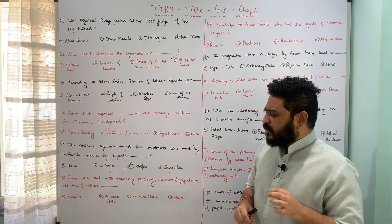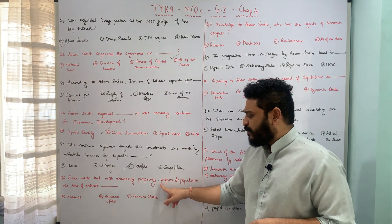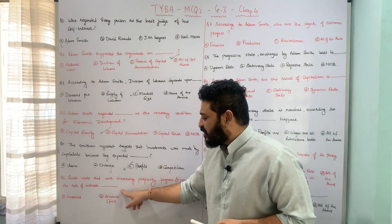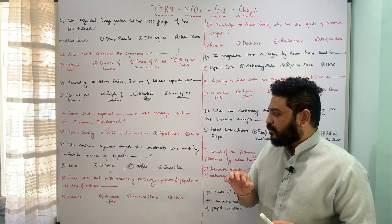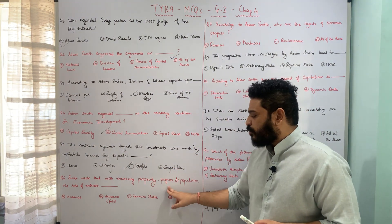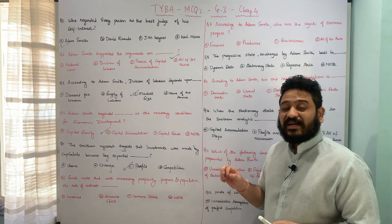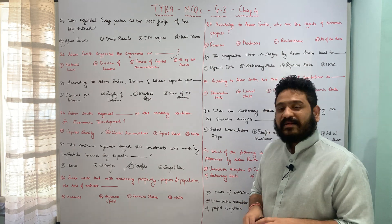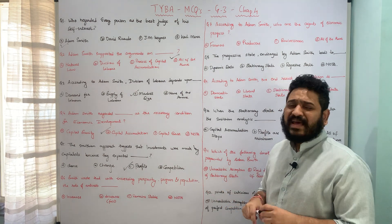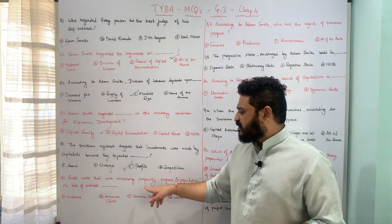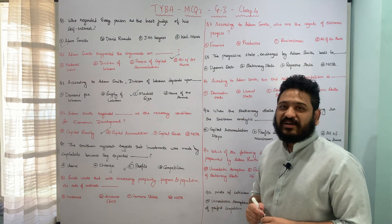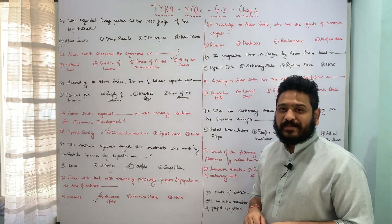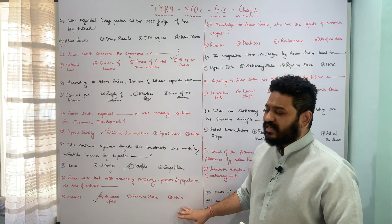The next question: Smith wrote that with increasing prosperity, progress and population, the rate of interest will be dash — A increase, B decrease or fall, C remains stable, or D none of the above. According to Smith, with increasing prosperity, progress and population, the rate of interest is bound to decrease or fall. The correct answer is option B, fall or decrease.